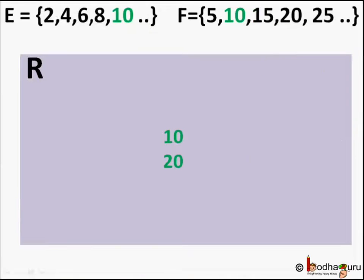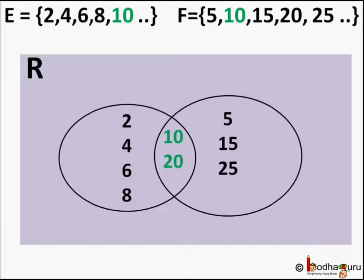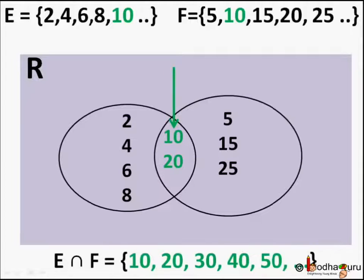So E intersection F in this example will have 10, 20, 30, 40, 50 and so on. That is numbers which are even numbers that is part of set E and also divisible by 5 that is also part of set F.